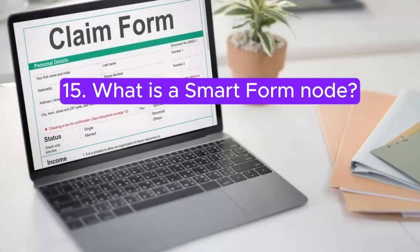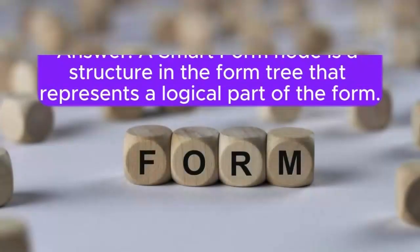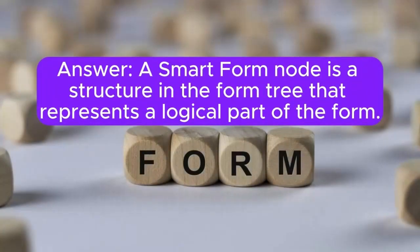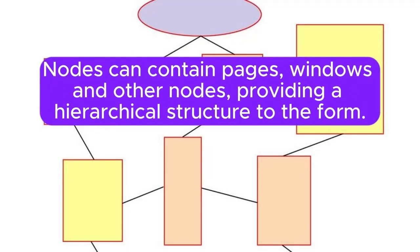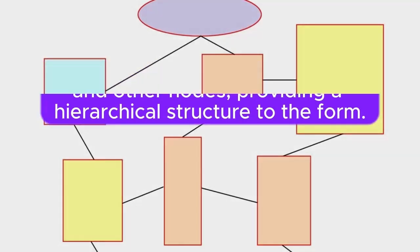15. What is a SmartForm node? Answer: A SmartForm node is a structure in the form tree that represents a logical part of the form. Nodes can contain pages, windows, and other nodes, providing a hierarchical structure to the form.